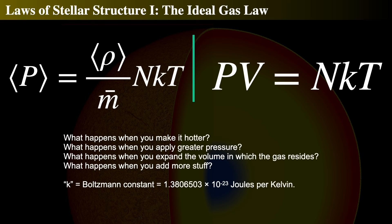How does pressure vary inside a star? We can go back to the ideal gas law from high school chemistry. The ideal gas law is what we'll use to determine the relationship between pressure, density, and temperature of the gas inside the star. It's a very good approximation because essentially every particle inside a star is a single particle, and we can use the ideal gas law for the incredible range of temperatures and densities inside a star.